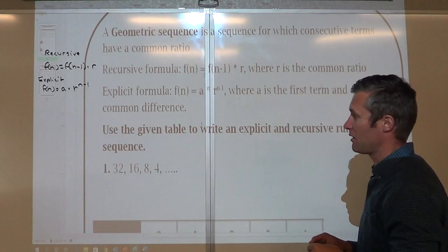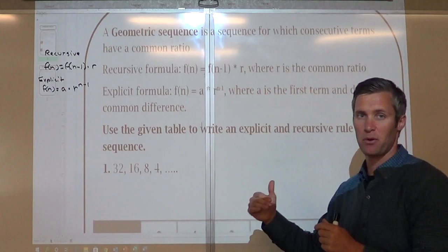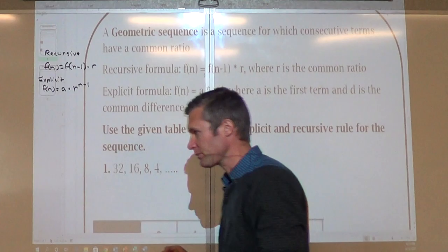In the previous section we looked at arithmetic sequences where we're adding to get to the next term. Now we're going to be multiplying to get to the next one. We're always going to put it in terms of multiplication — so if I divide by two, that's the same as multiplying by one half. Always put it in terms of multiplication.